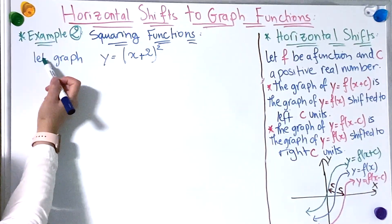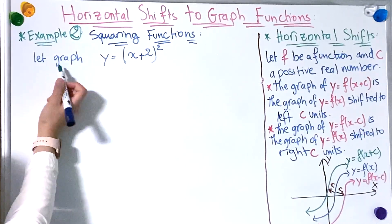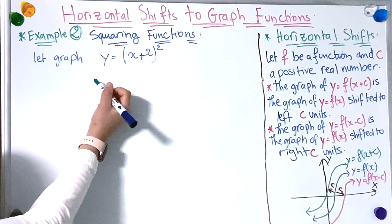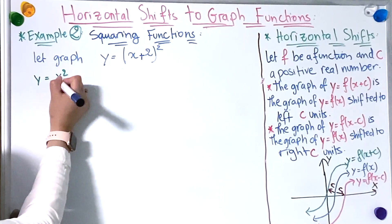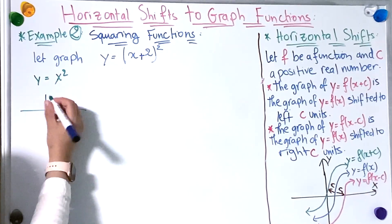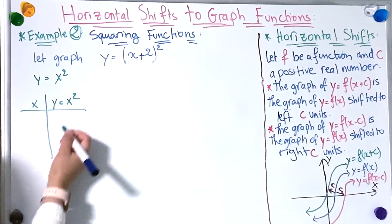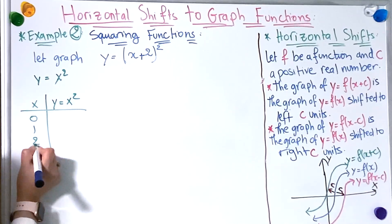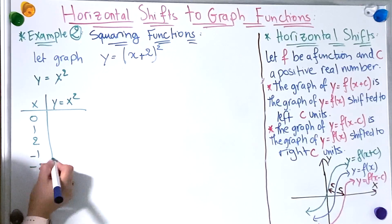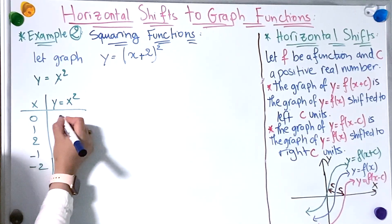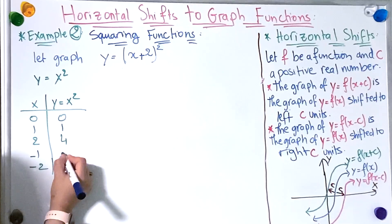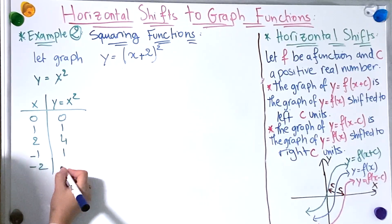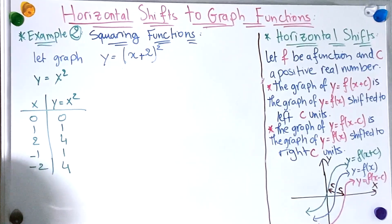Now let's see the second example. Here I'm going to use the squaring function. So let's graph y = (x + 2)². First, I'm going to graph y = x². I'm going to start with the table. I have x and y = x², taking random numbers: 0, 1, 2, −1, −2. So: 0² = 0, 1² = 1, 2² = 4, (−1)² = 1, (−2)² = 4.